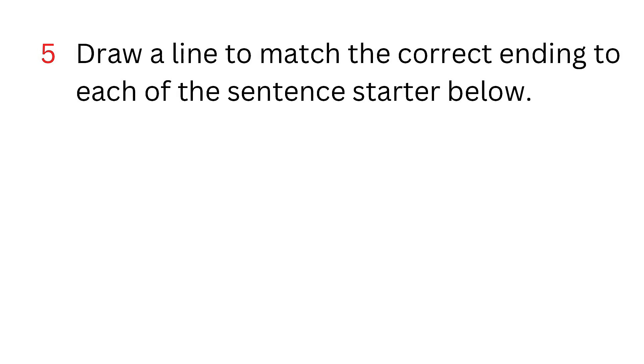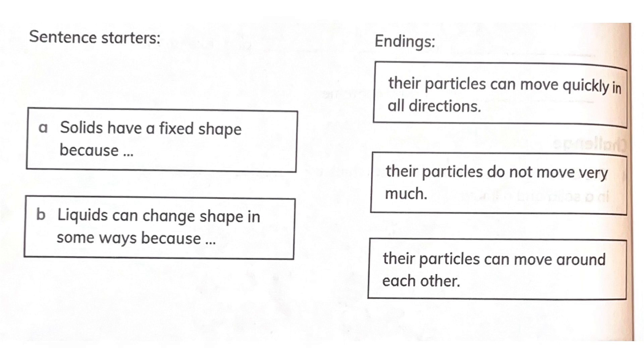Question number five: Draw a line to match the correct ending to each of the sentence starters below. A: Solids have a fixed shape because their particles do not move very much. B: Liquids can change shape in some ways because the particles can move around each other.